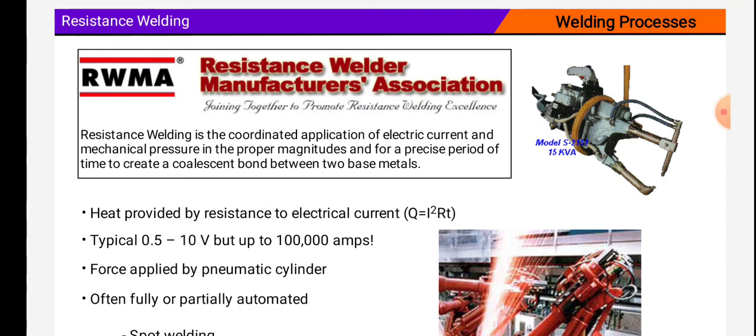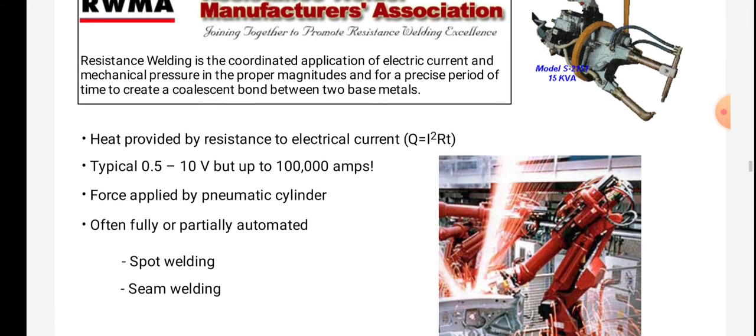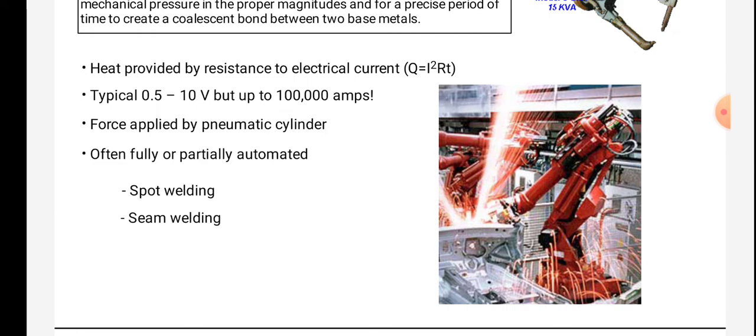Resistance welding. Resistance Welder Manufacturers Association, RWMA. Resistance welding: the coordinated application of current and mechanical pressure in the magnitudes and for a precise period of time to a coalescing constricting bond between two base metals. Heat provided by resistance to electrical current. Typical 0.5 to 10 volts but up to 100,000 ampere.